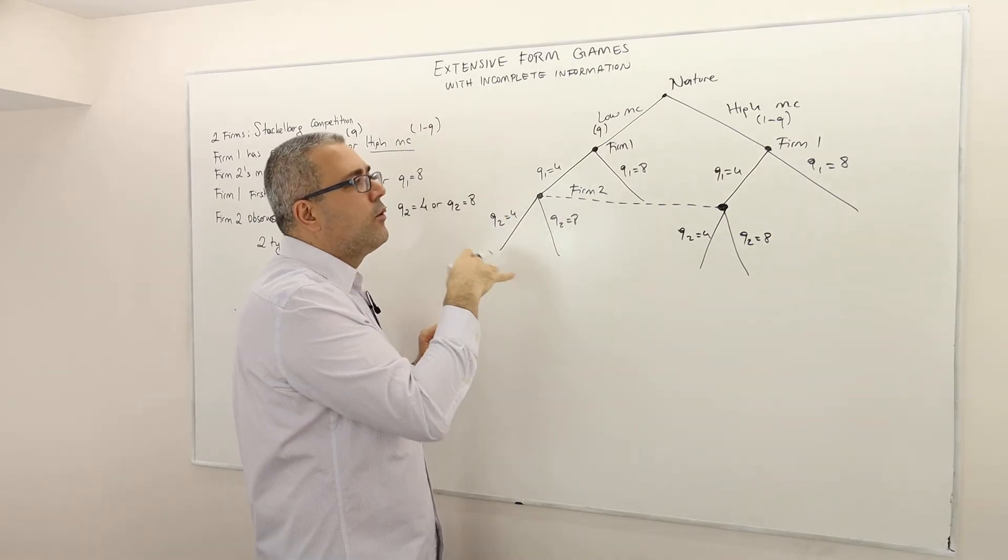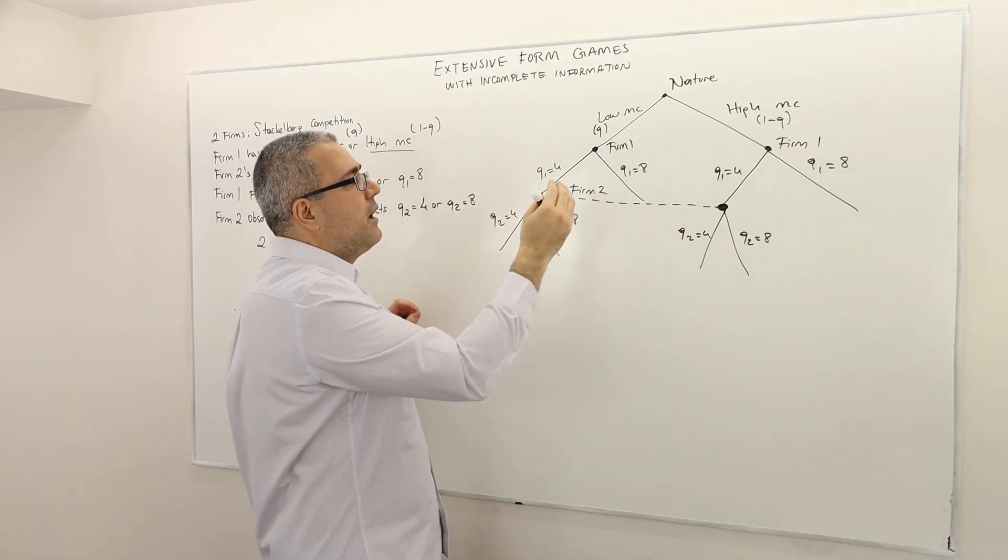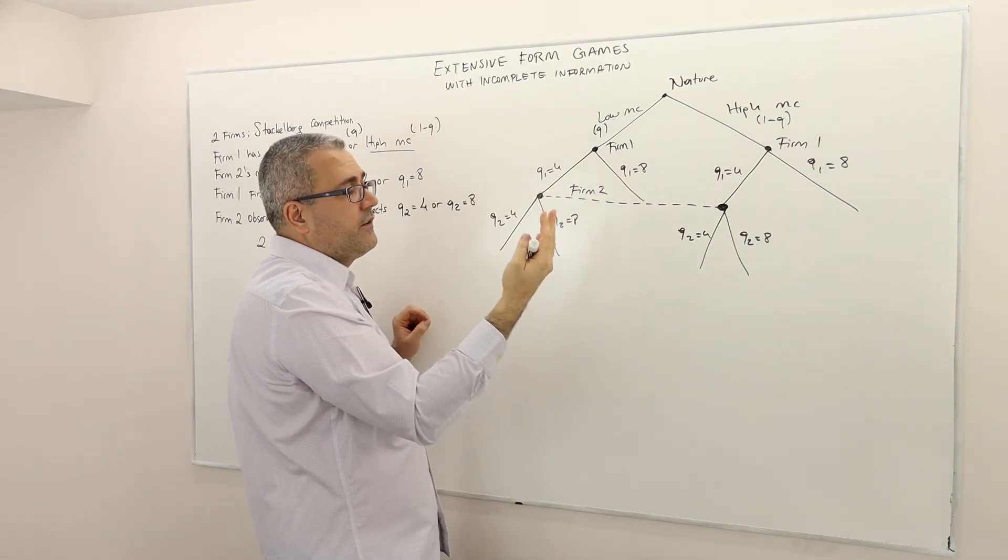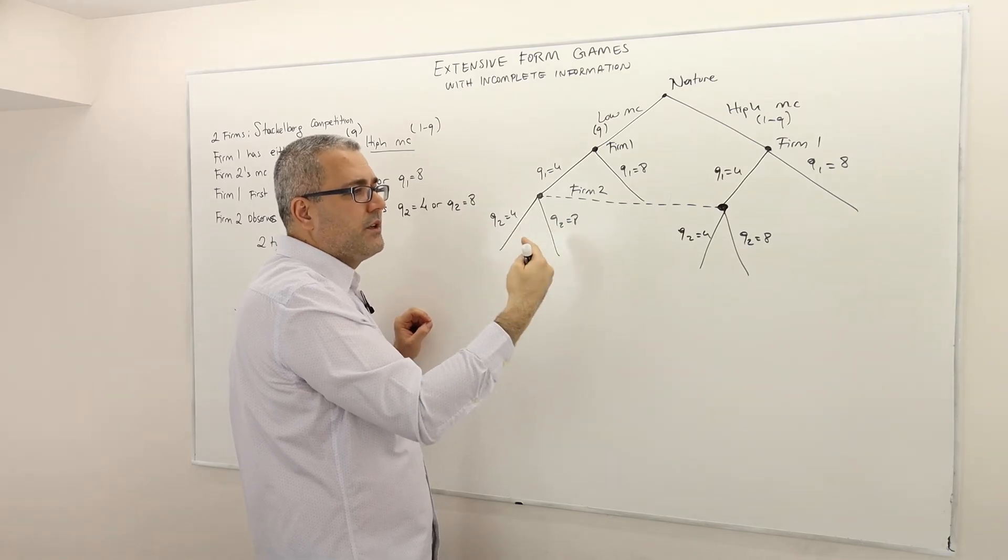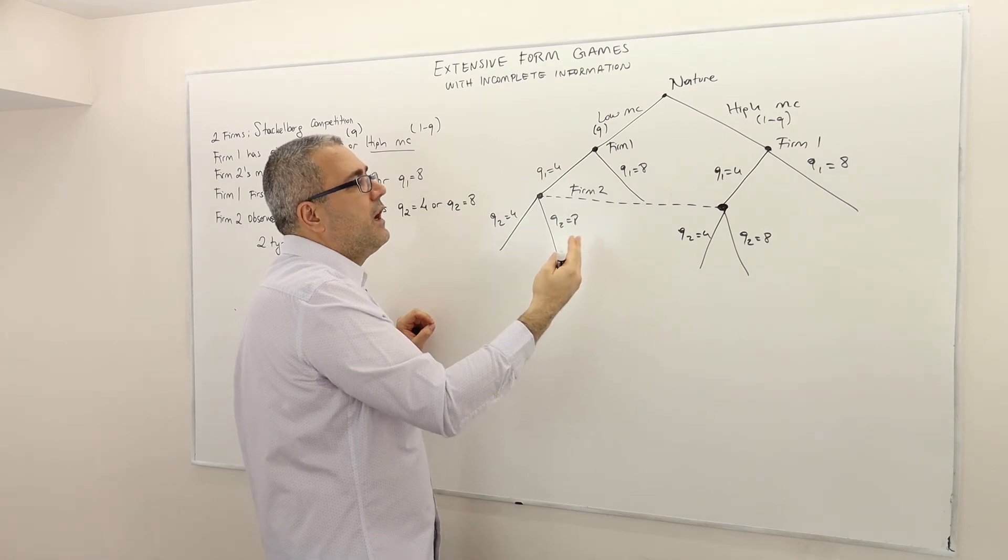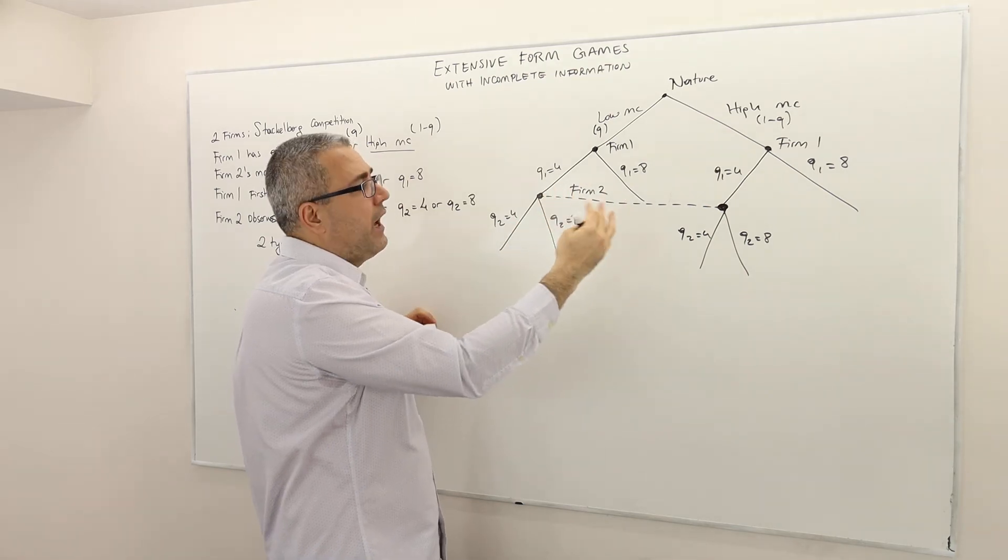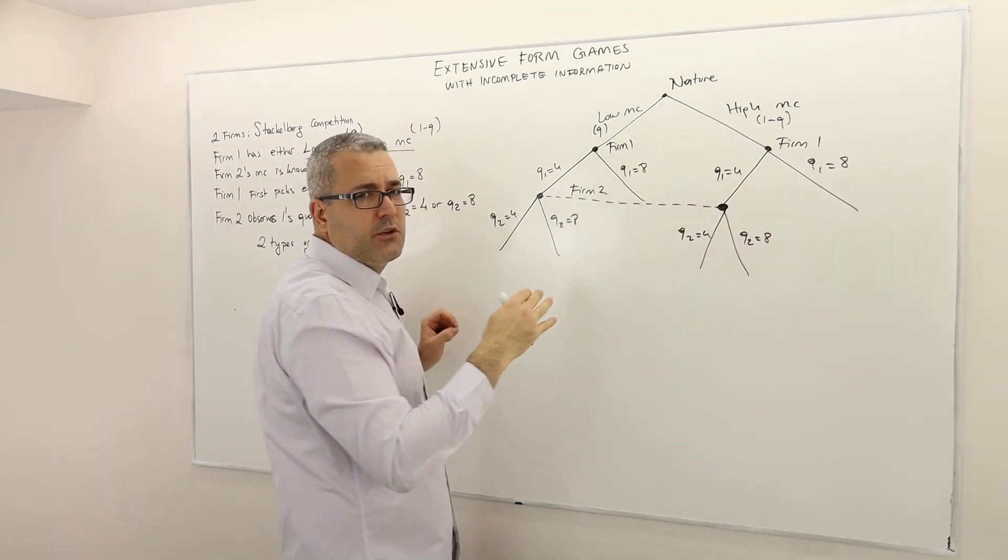Well what about firm 1 chooses 8 units of quantity? Firm 1, low or high cost firm 1. Well in this case once again 4 is different than 8. So firm 2 can distinguish that firm 1 has actually chosen a different quantity, different than 4. But the thing is, this 8 units of output, is it coming from the low marginal cost firm or high marginal cost firm?